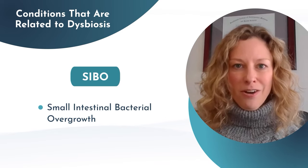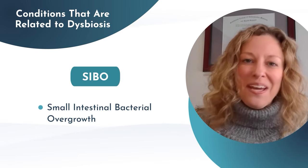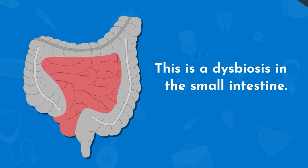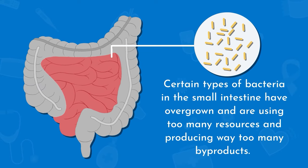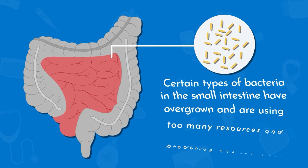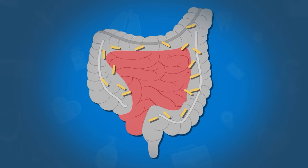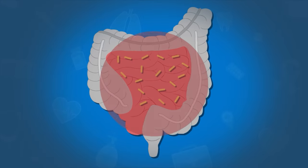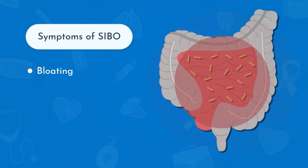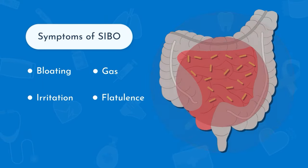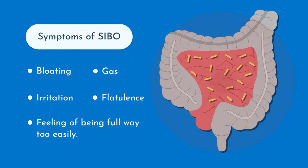Another condition directly related to dysbiosis is SIBO — small intestinal bacterial overgrowth — which we see a lot of in my medical practice. This is a dysbiosis in the small intestine where certain types of bacteria have overgrown and are using too many resources and producing too many byproducts. In some cases, bacteria from the large intestine migrate up to the small intestine. This can result in changes in gut motility and a wide array of digestive discomforts — classically a lot of bloating, gas, eructation or flatulence, and feeling full too easily.